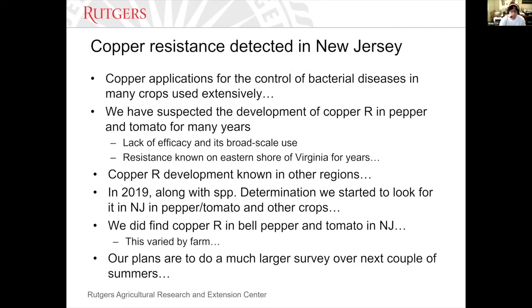Copper has been used for many, many decades to control bacterial leaf spot and other bacteria in vegetable production. We've suspected that we have resistance in New Jersey, and resistance has been known on the eastern shore of Virginia for many, many years. Copper resistance has developed in other regions. We're going to continue this survey over the next couple summers and expand it to more farms. If you have suspect copper resistance, or would like to know what species are present on your farm in Delaware, we may be able to work something out to get samples shipped to our bacteriologist on campus.